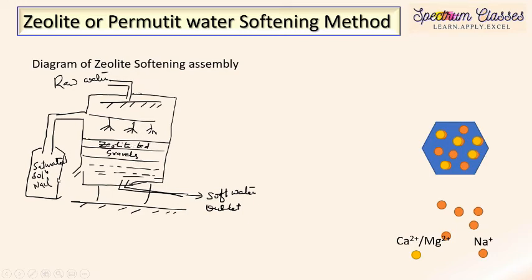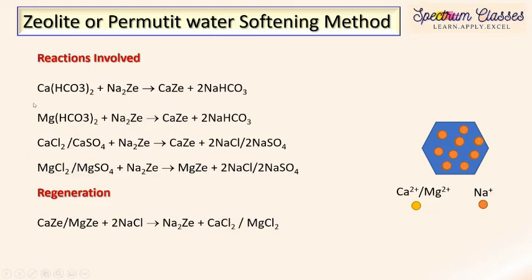For regeneration: a saturated solution of NaCl (brine water) is used. We stop the flow of raw water, then inject this sodium chloride solution using pressure. The NaCl solution causes sodium to re-attach to the zeolite, and calcium and magnesium are removed. That solution is flushed out from the outlet. In this way the zeolite softening assembly is regenerated.